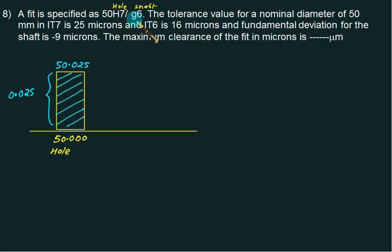Now for shaft we have letter G. So H has 0 fundamental, so G will be below. This is H, so G will be somewhere here ABCD AFG. So it has a negative tolerance and the fundamental deviation was clearly mentioned as minus 9. So do not bother about this one. In gate examination they clearly give plus minus fundamental deviation. If you remember it, well and good.